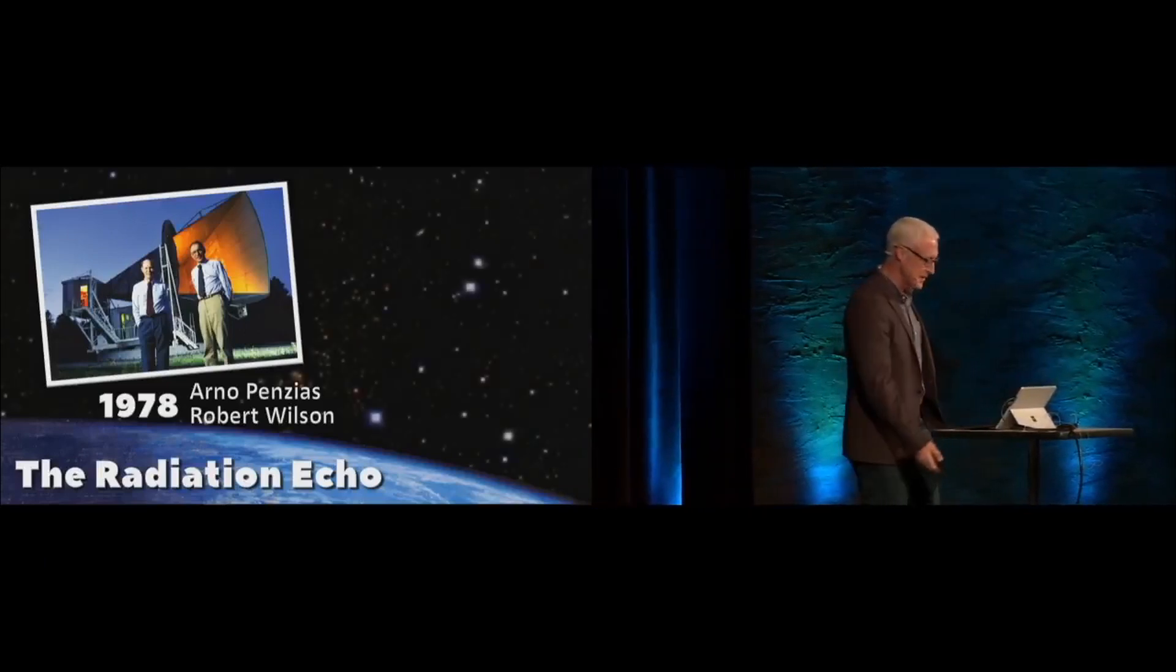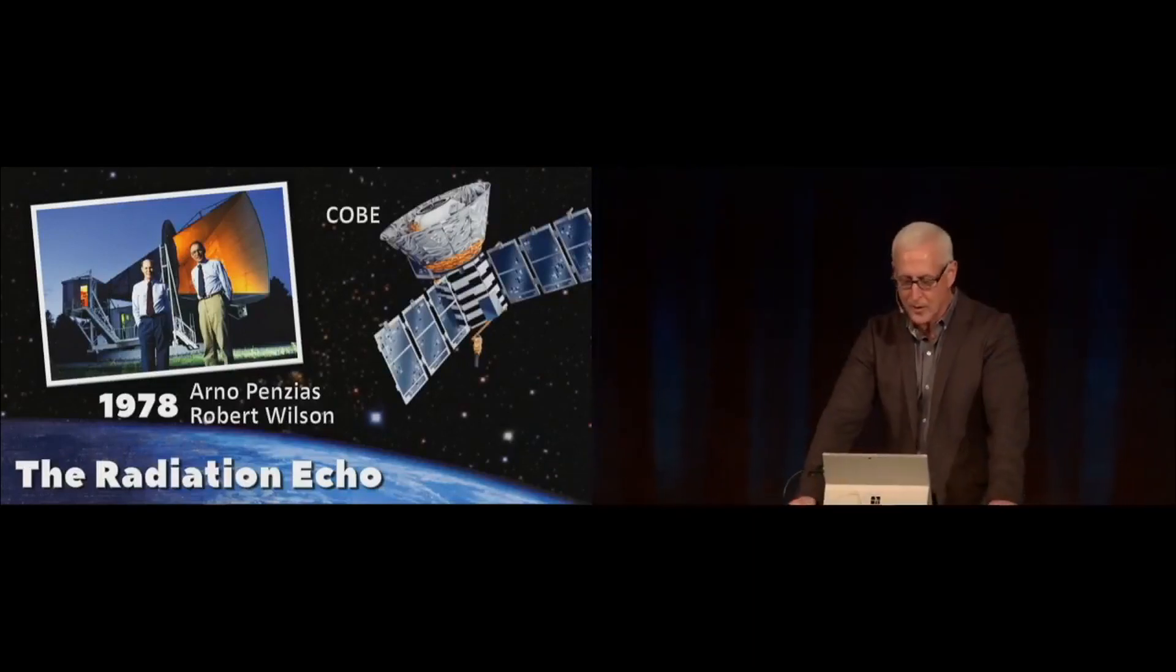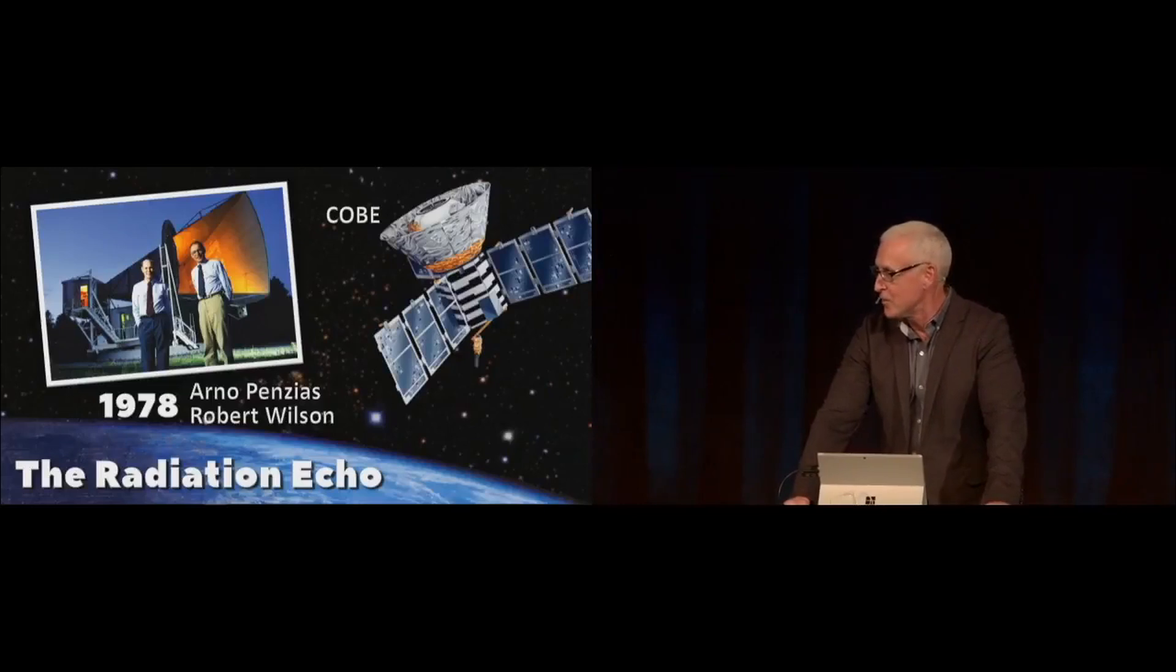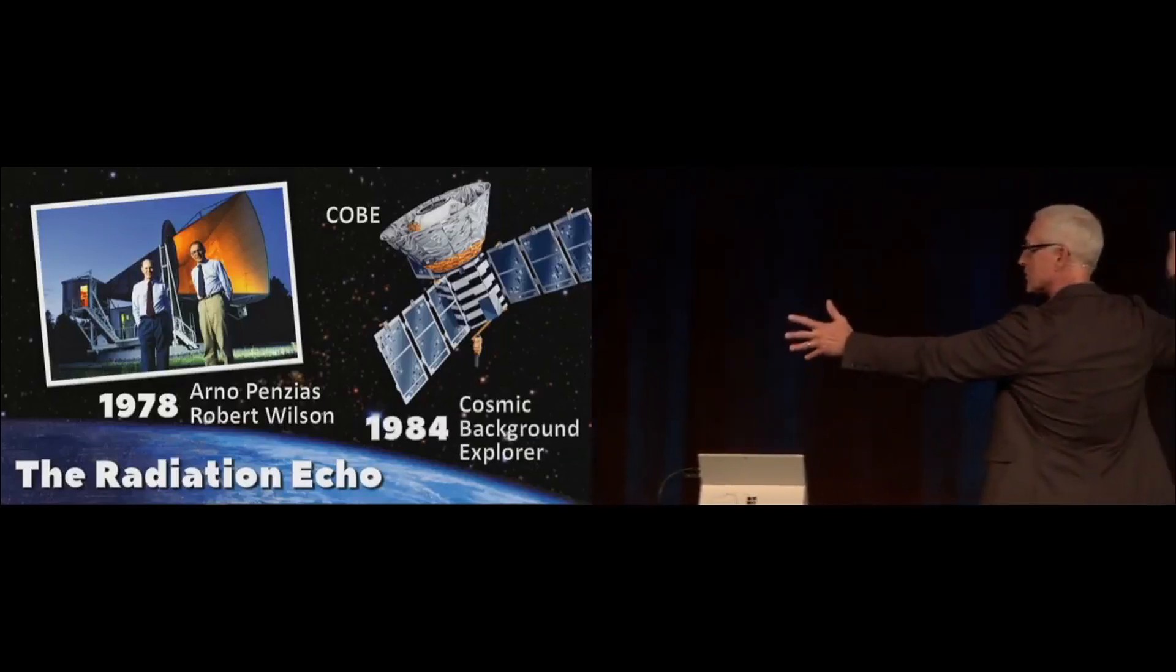We have now since this time launched satellites. Here's one, COBE, not Kobe Bryant, but COBE, the cosmic background. This satellite now has actually photographed the background radiation of the universe. And it's pretty uniform across the universe.